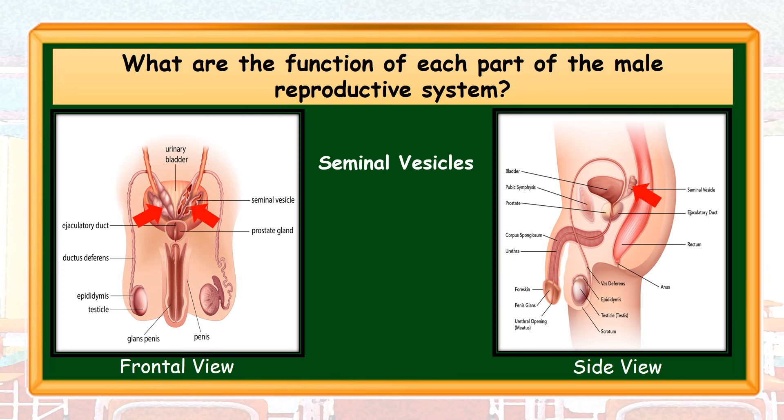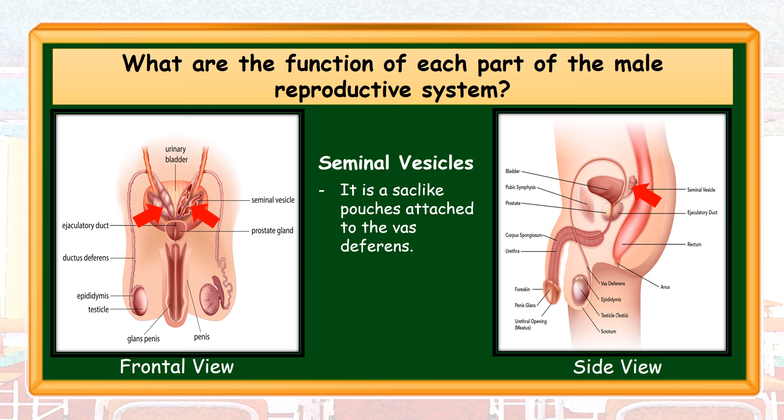Seminal vesicles — they are sac-like pouches attached to the vas deferens. They contribute to semen production. Semen is a sugar-rich fluid which provides energy for the sperm cell's motility.